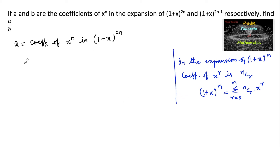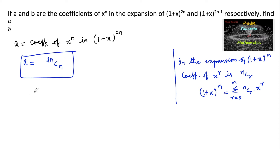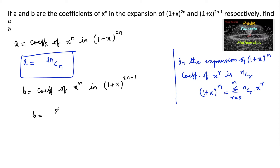Using this concept, we can say a is equal to 2nCn, which is the coefficient of x power n. Similarly, b is equal to the coefficient of x power n in the expansion of 1 plus x whole to the power 2n minus 1. So we can write b is equal to 2n minus 1 Cn.